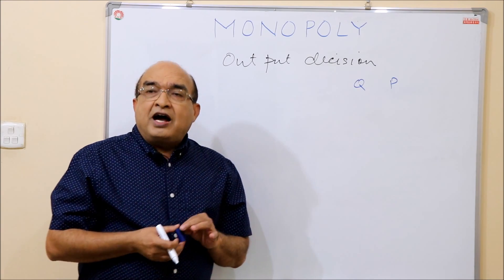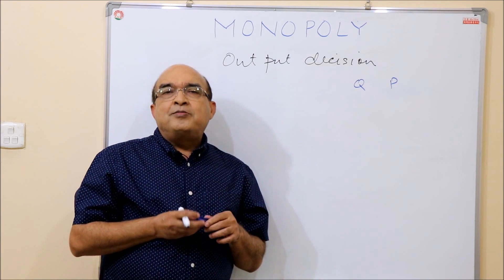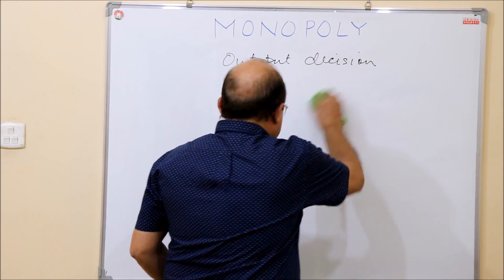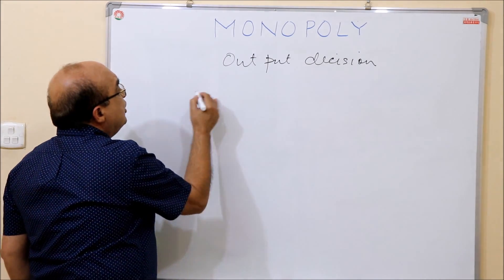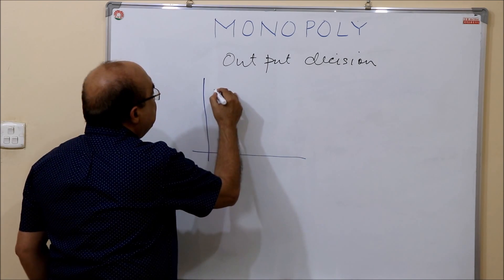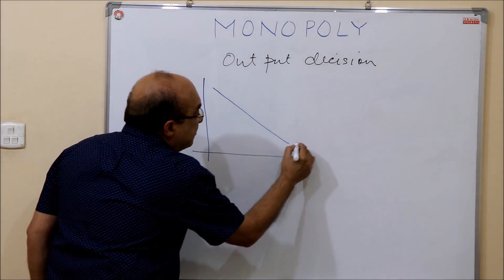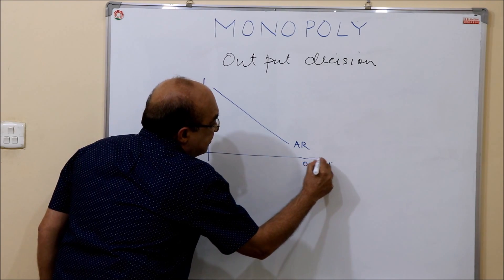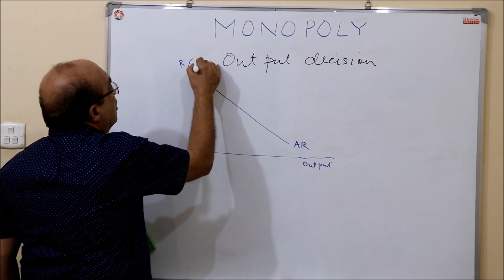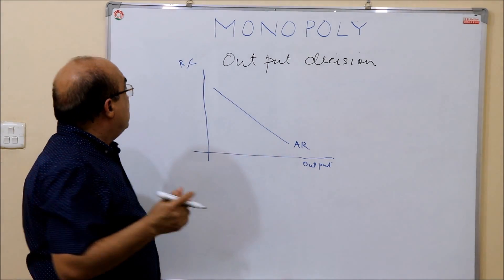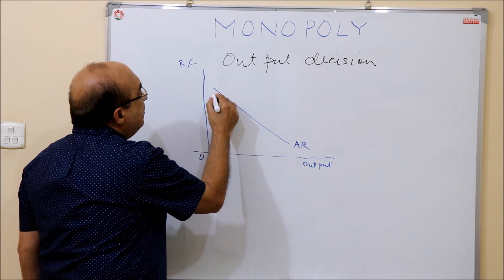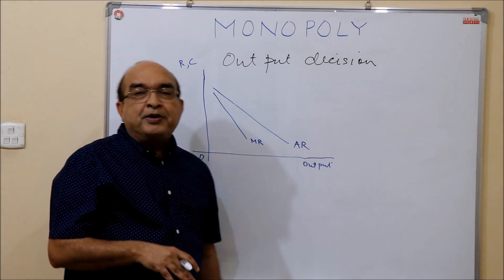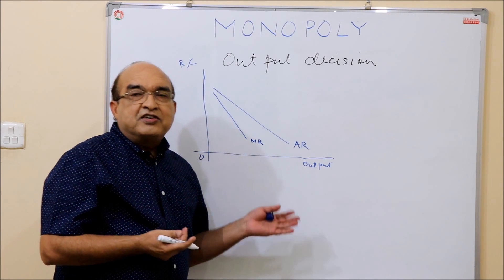In this video I will be explaining how a firm arrives at the output decision under monopoly. We have already seen that a monopolist faces a downward sloping demand curve, which is the average revenue curve for the firm. Output is measured along the x-axis and revenue and cost conditions — whether average or marginal — on the y-axis. Marginal revenue is also downward sloping and steeper, because it must be less than average revenue at each level of output.